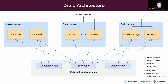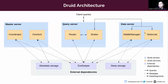A query server provides the endpoints that users and client applications can interact with. Query servers divide this operation between brokers and the router. The broker service receives queries from external clients and forwards those queries to data servers; when it receives results, it merges them and returns them to the caller. The router service basically provides a unified API gateway in front of broker, coordinator, and overlord.